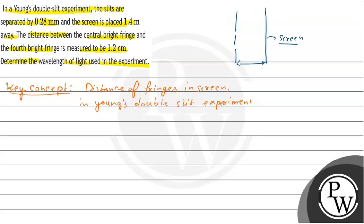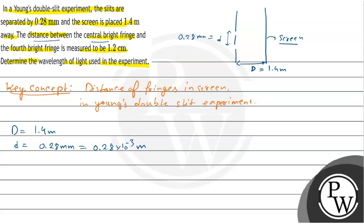The distance from the slits to the screen is D, which is given as 1.4 meters. The distance between the slits, that is small d, is equal to 0.28 millimeters, which equals 0.28 × 10⁻³ meters. It is also given that the distance between the central bright fringe and the fourth bright fringe is 1.2 cm, so y = 1.2 × 10⁻² meters.